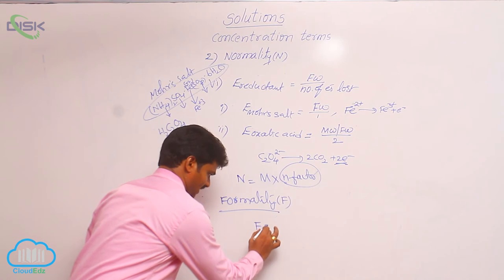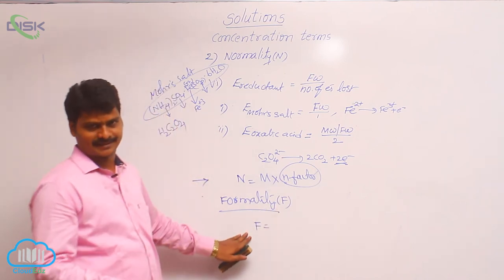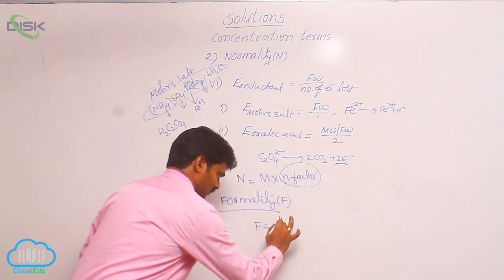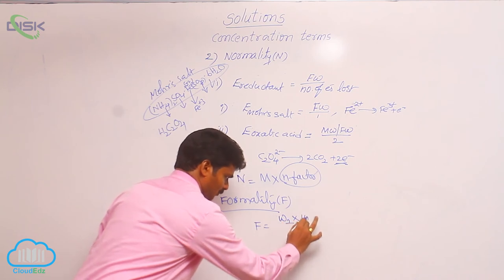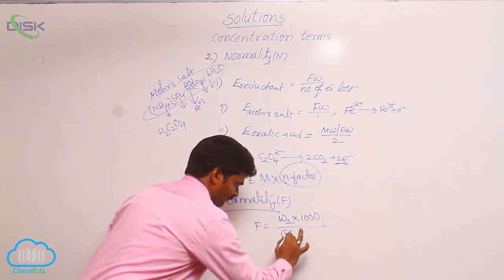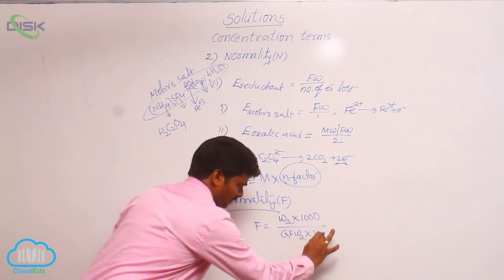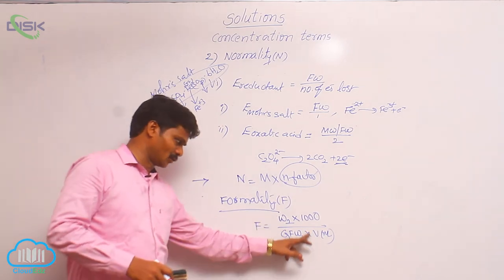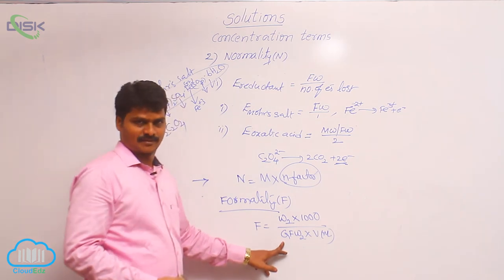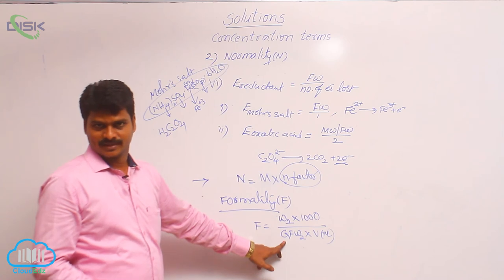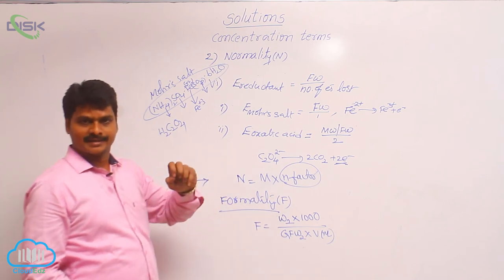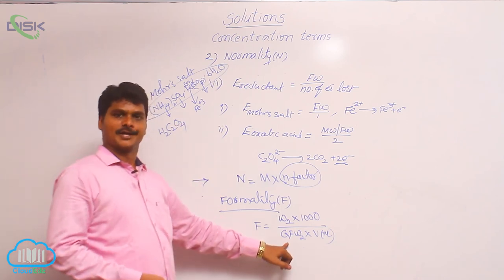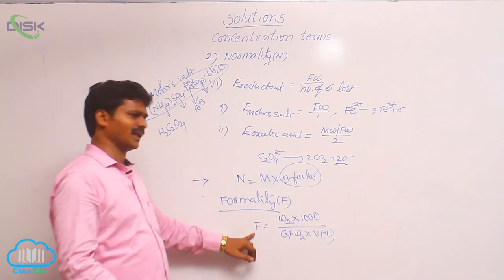The formula for formality is similar to molarity: F = (weight of solute × 1000) / (gram formula weight of solute × volume in mL). In molarity we use gram molecular weight, but in formality we use gram formula weight, because formality applies to ions and ionic pairs, not molecular substances. All other aspects remain the same as in molarity.